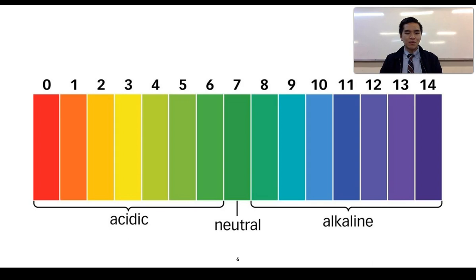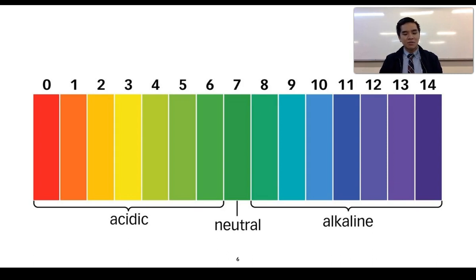We know the pH scale ranges from 0 through to 14, broken into three clear groups: a pH of 7 is neutral, less than 7 is acidic, and greater than 7 is alkaline. But what does it actually mean for a solution to be acidic, neutral, or alkaline?